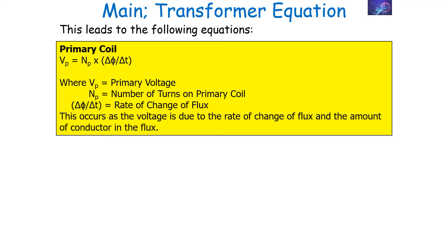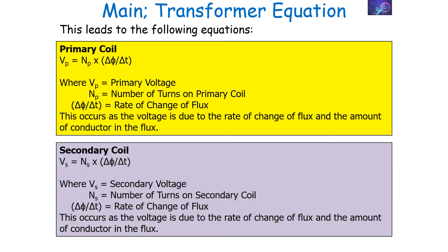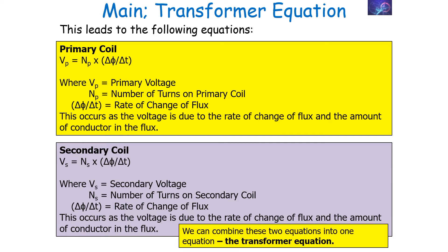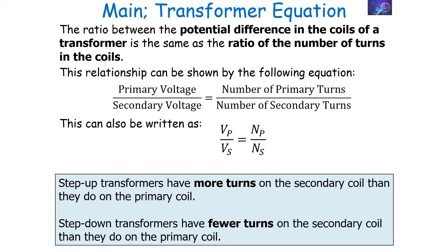Similarly, VS, the secondary voltage, is equal to NS times by the rate of change of flux, delta-Φ over delta-t. This is again Faraday's law of induction — the induced EMF, the voltage, is due to the rate of change of flux and the amount of conductor in the flux. We can combine these two equations into one: the transformer equation. The ratio between the potential difference of the coils is the same as the ratio of the number of turns, so VP over VS equals NP over NS.